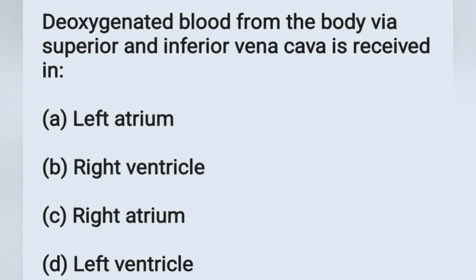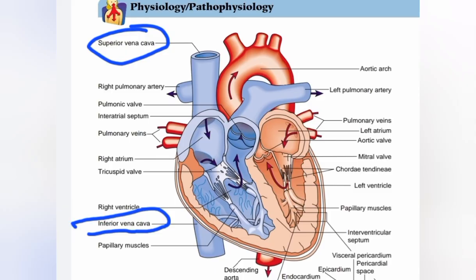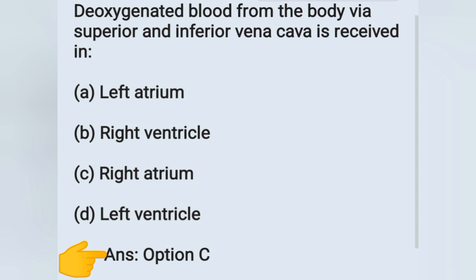Next question: deoxygenated blood from the body via superior and inferior vena cava is received in which chamber? Options: (a) left atrium, (b) right ventricle, (c) right atrium, (d) right ventricle. Deoxygenated or impure blood from the body enters the heart through the superior vena cava and inferior vena cava into the right atrium. From the right atrium it goes to the right ventricle and through the pulmonary artery to the lungs for purification. Correct answer is option C, right atrium.